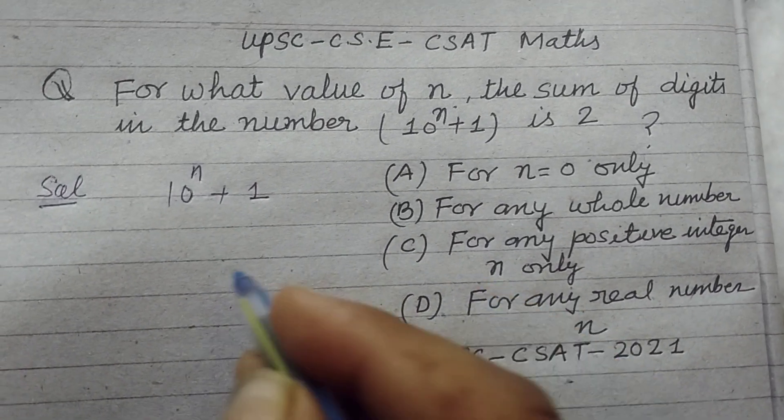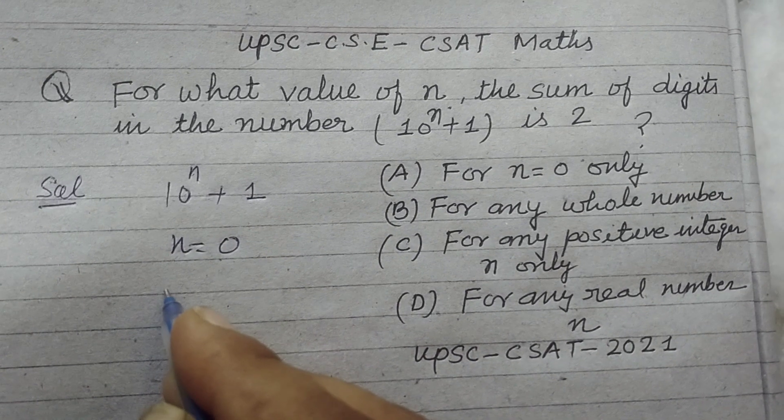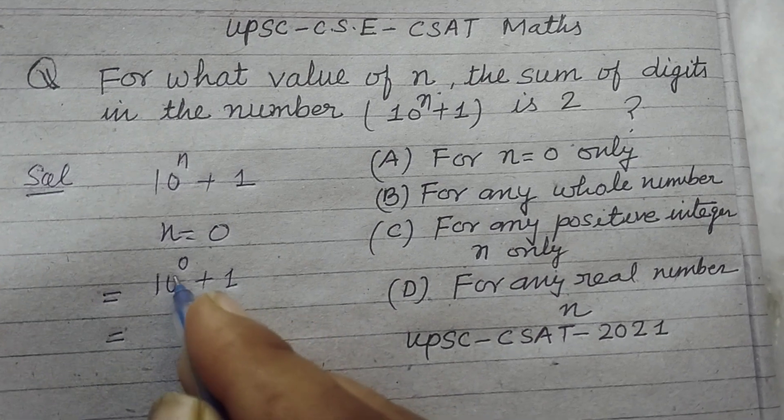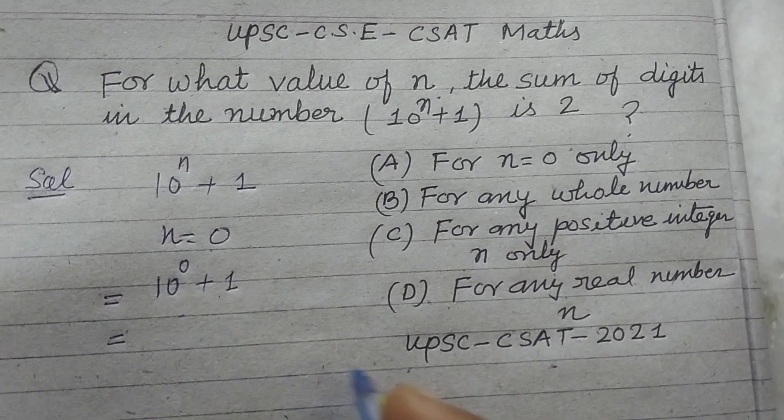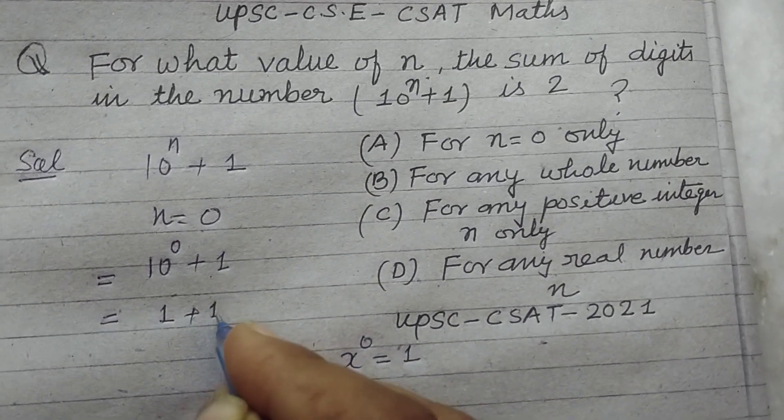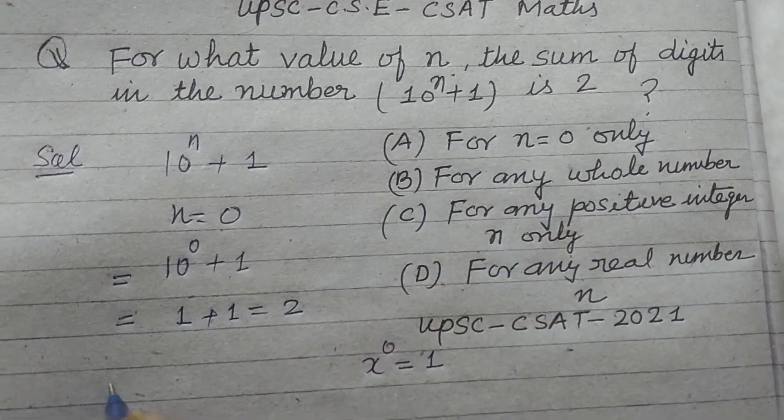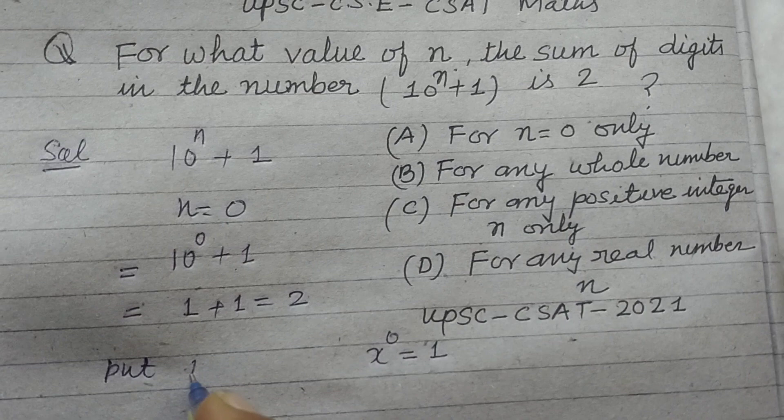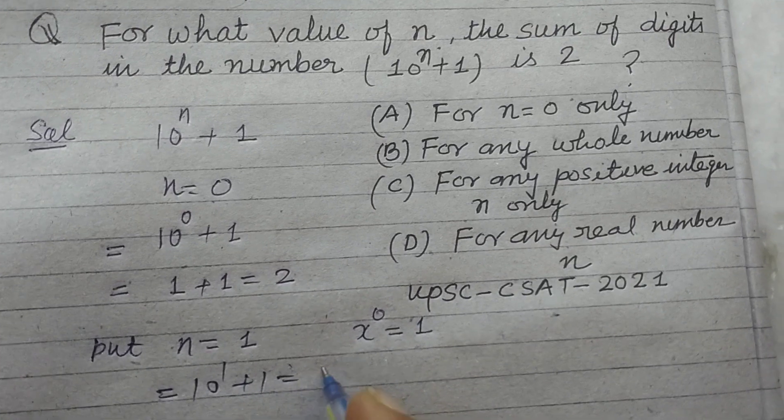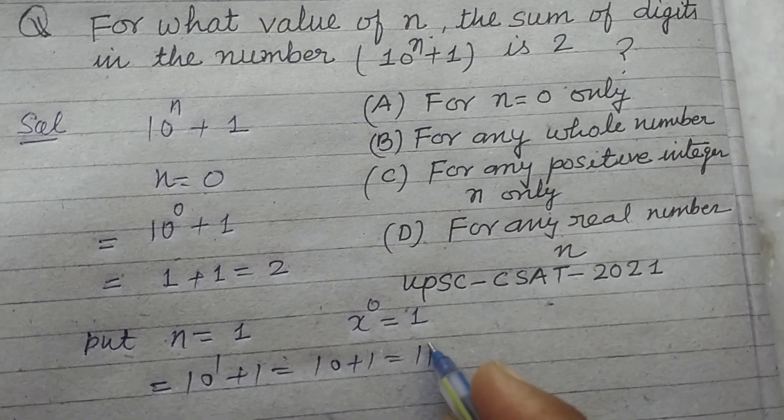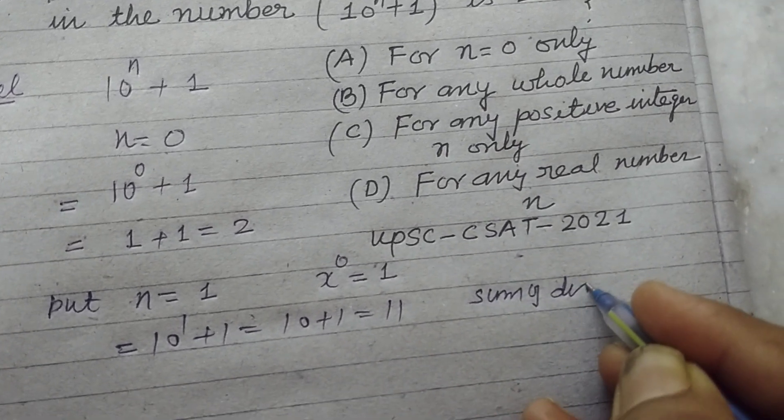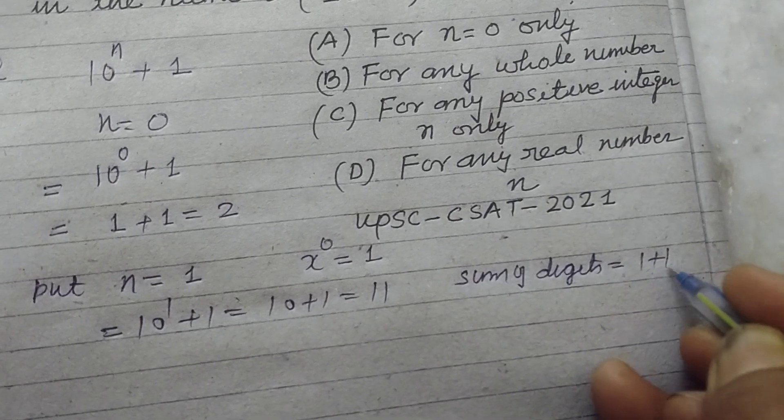We check this for n = 0. We put 10^0 + 1. You know that any number to the power 0 equals 1. So this is 1 + 1 = 2, satisfying the condition. Put n = 1: 10^1 + 1 = 10 + 1 = 11, and the sum of digits 1 + 1 = 2.